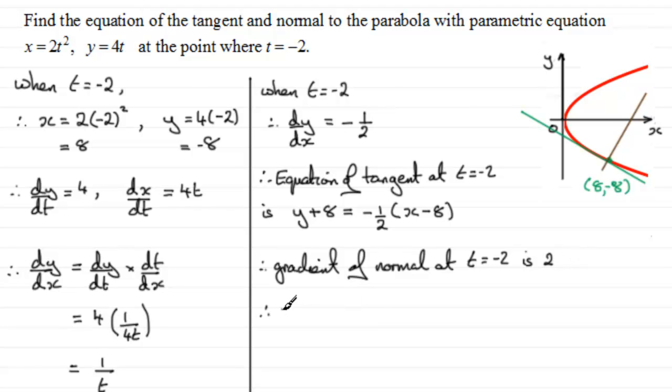So therefore, the equation of that normal at t equals minus 2, well that's going to be simply again y minus y1, y minus minus 8, so that's going to be plus 8, equals m, the gradient which is now going to be 2, multiplied by x minus x1, x1 being 8. So again, there's your equation, and you can then carry on to put it in any particular format that you wish.